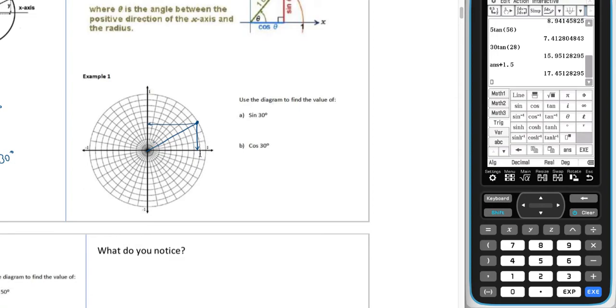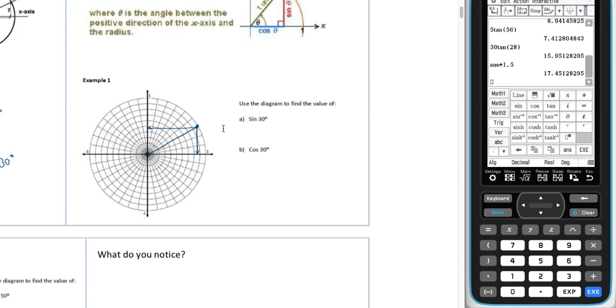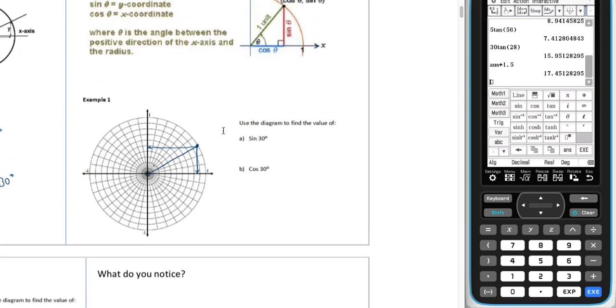And what we have there is if we can figure out the x-value, that's our x-value, which is cosine theta. And if we can figure out our y-value, that's our sine theta. Now, in this case, we figured out the angle sweep of 30 degrees.